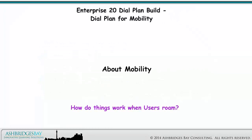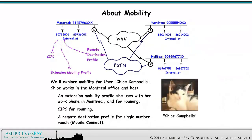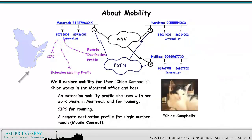We'll explore mobility for user Chloe Campbell. Chloe works in the Montreal office and has an extension mobility profile she uses with her work phone in Montreal and for roaming, CIPC for roaming. Some users may have wireless phones, and a remote destination profile for single number reach — Mobile Connect.